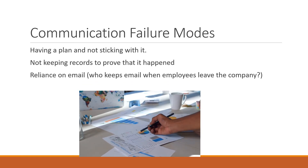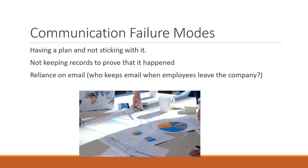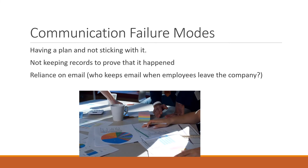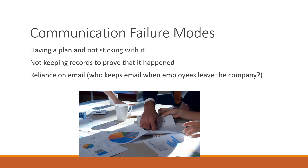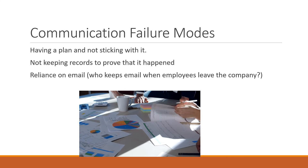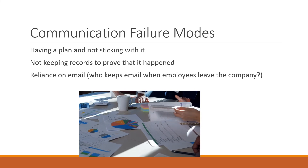There are some failure modes on this. One is having a plan and not sticking with it — if your plan requires you to communicate to employees four times a year about the status of objectives and then you don't do it and don't maintain objective evidence of it, it's problematic. Secondly, not keeping records to prove these communications happened is a potential non-conformance. And thirdly, reliance on email — for example, who keeps email when employees leave the company? There's an information and communication security question around all that.